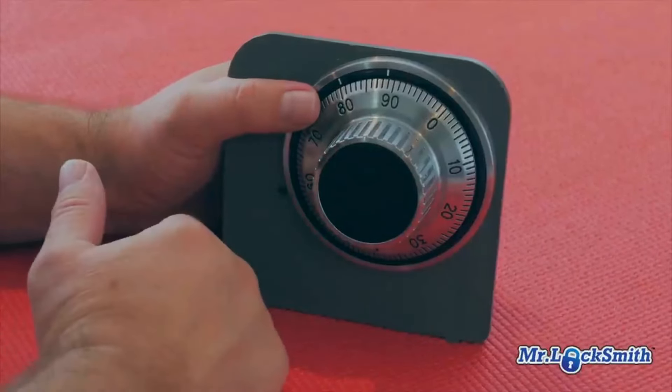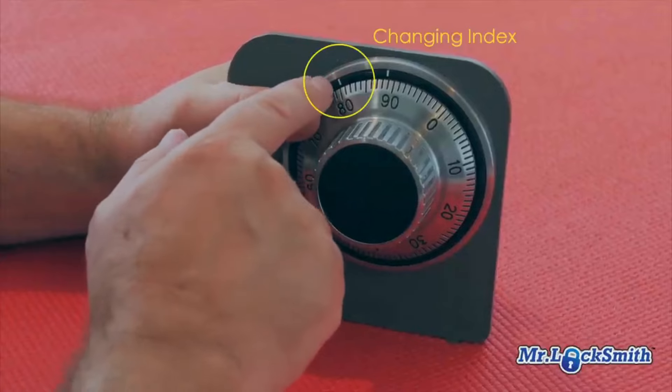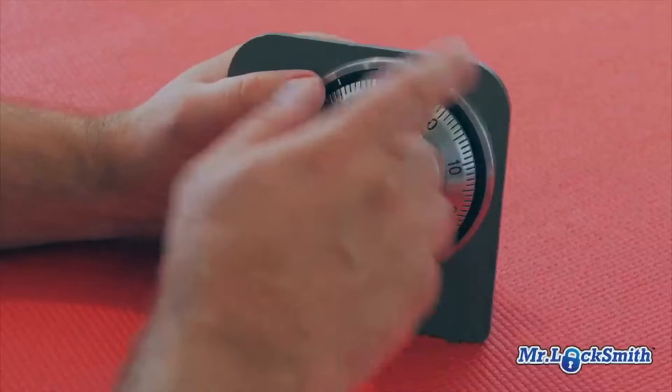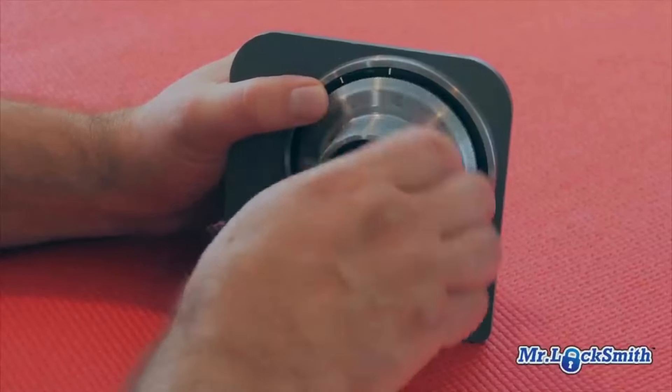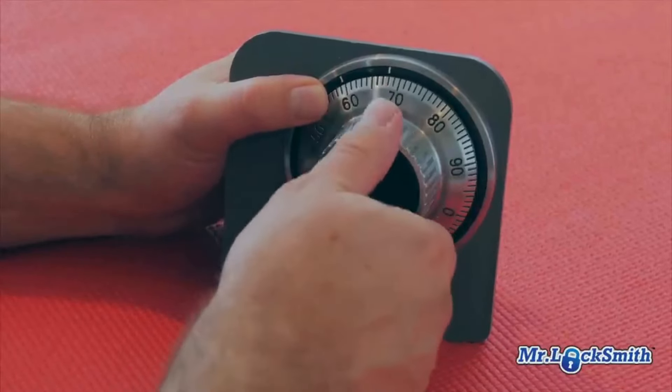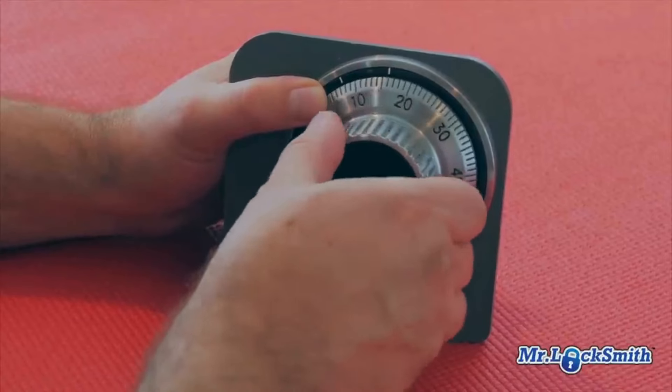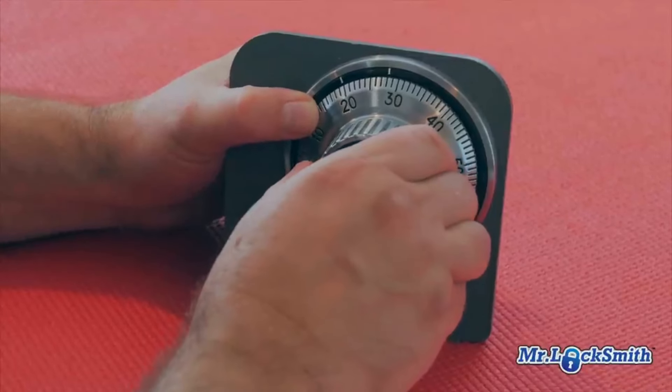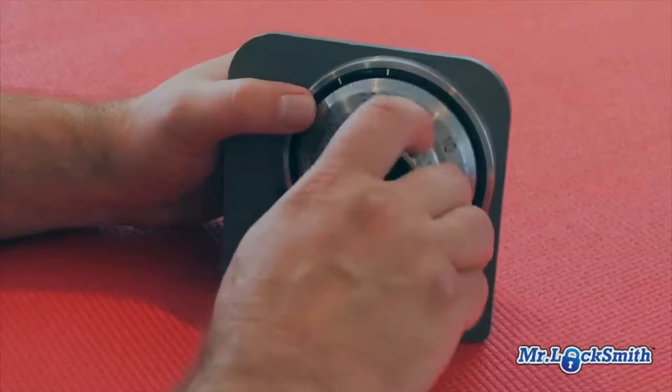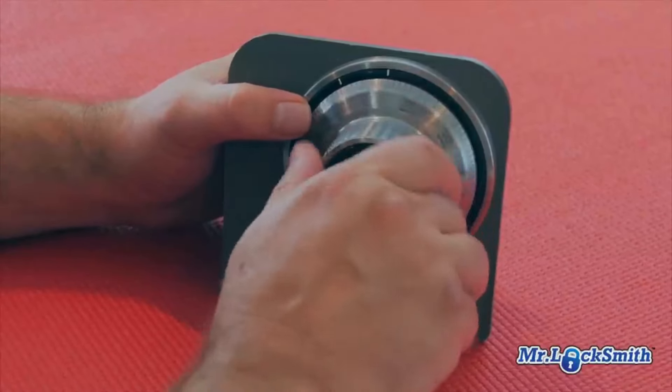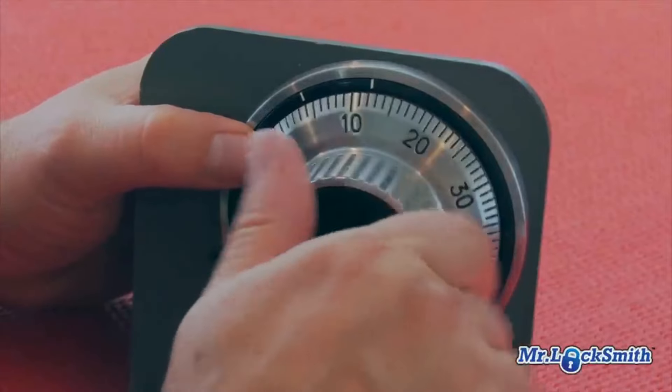This time we're going to the changing index and we're not going to go to open. We're going to go again half a dozen times. Our first number is 20, so we're going to stop at 20. Our next number is 40 - again, this is the changing index. We're going to pass 40 once, twice, stopping on the third time.